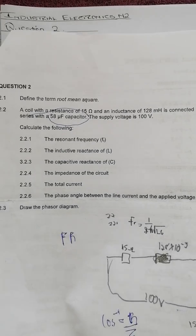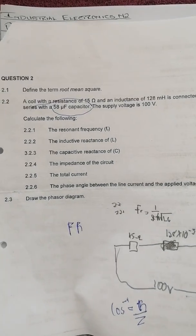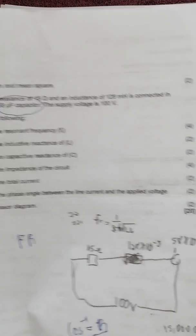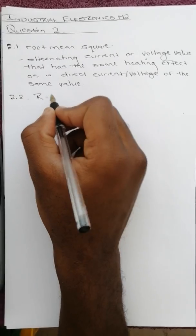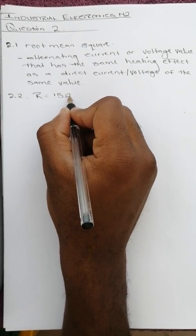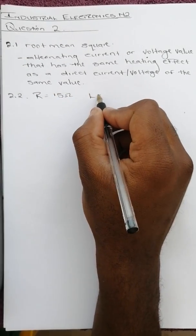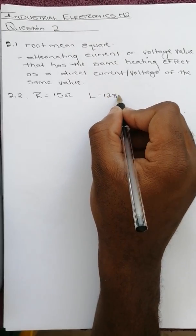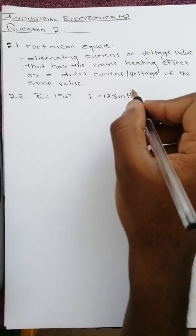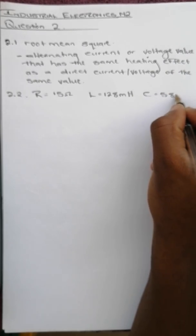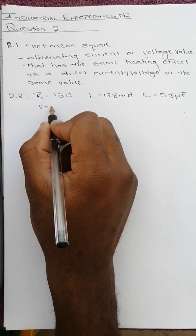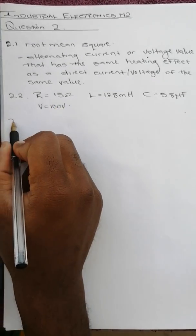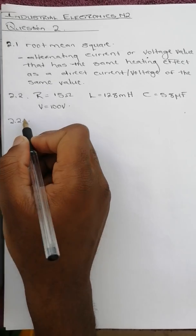So let's write down what we're given and try to answer the questions given to us. We are given that R equals 15 ohms, L equals 128 millihenries, C equals 58 microfarad, V equals 100 volts. 2.2.1 says